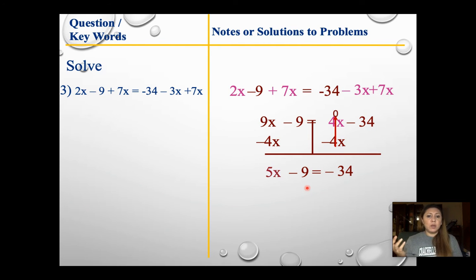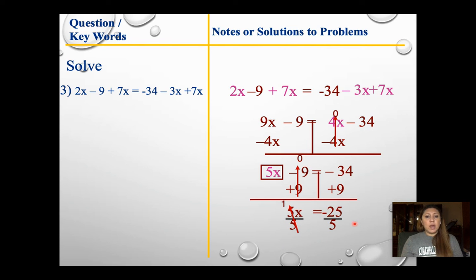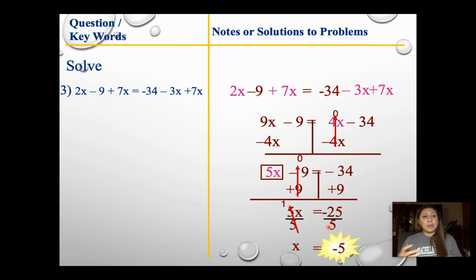From here it's just a basic two-step equation. I add 9 to both sides to get rid of the negative 9. My 5x comes down, negative 9's go away, and I'm left with different signs — so subtract. 34 minus 9 is 25, and it'll be negative because 34 is bigger. Divide both sides by positive 5. I have a positive and a negative, so that gives me x equals negative 5. Always pay attention to those negatives — we try to keep them infrequent, but you'll still probably end up with some.